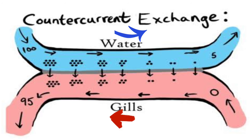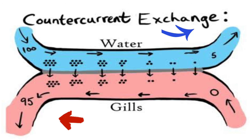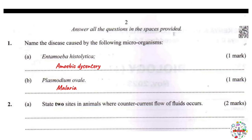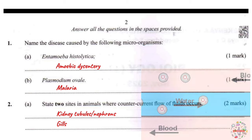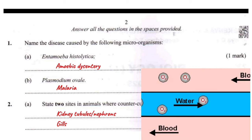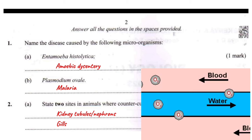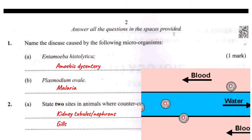The reason why this happens is to enhance the exchange of materials such as gases — oxygen and carbon dioxide — or solutes. Two examples of where the countercurrent system is found: number one is the gills of fish. Blood flows in one direction while water flows in the opposite direction across the gills.